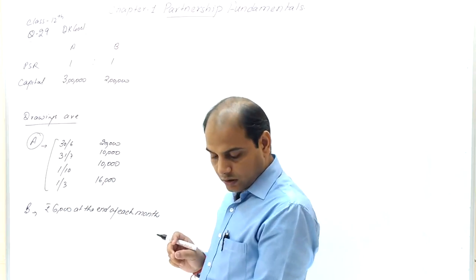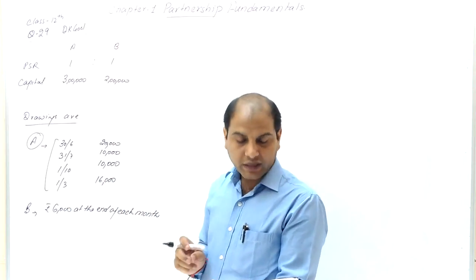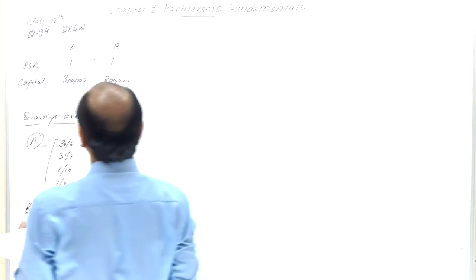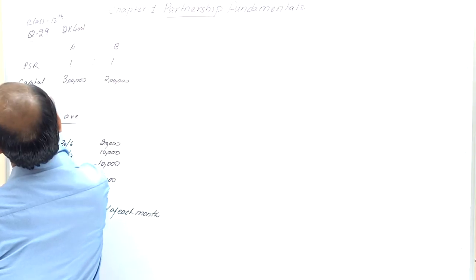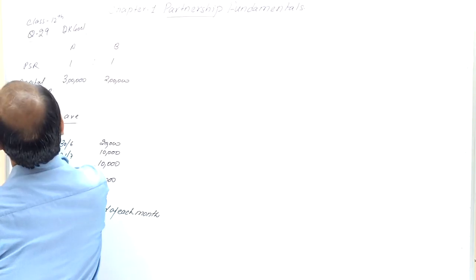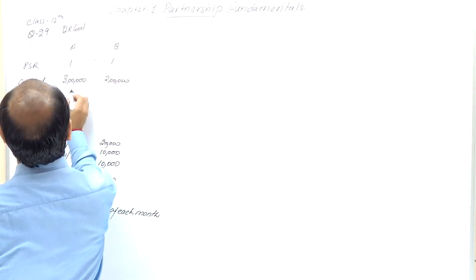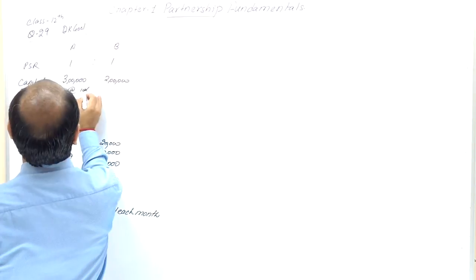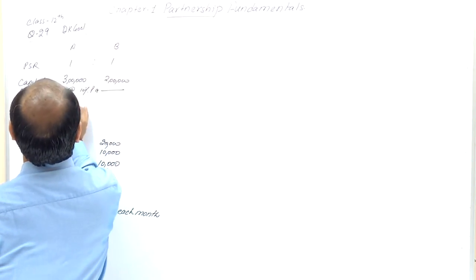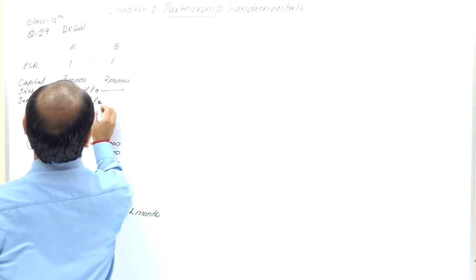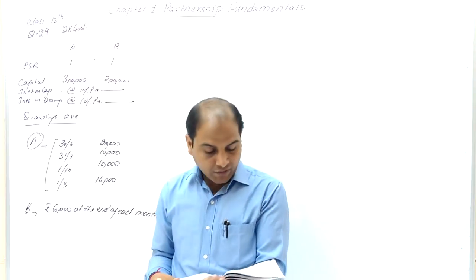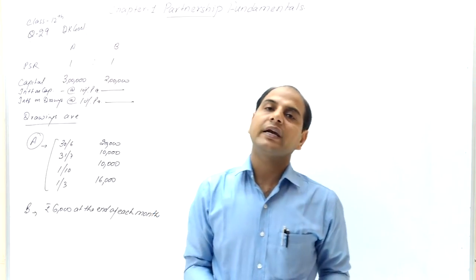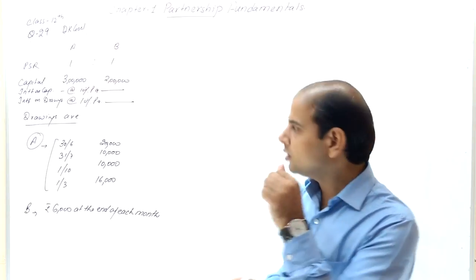The partnership deed provides interest on capital and interest on drawings at the rate of 10% per annum for both partners. We have to calculate interest on capital and interest on drawings.